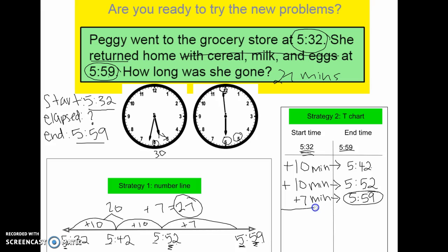And then I'm just going to add all of these minutes together to see how many total minutes elapsed, which again gives me the same answer of 27 minutes. So these are just two different strategies that you can use to figure out your elapsed time.